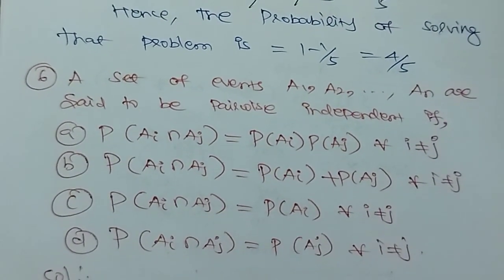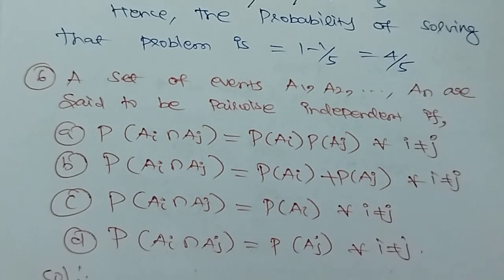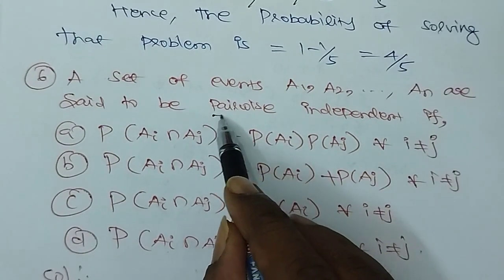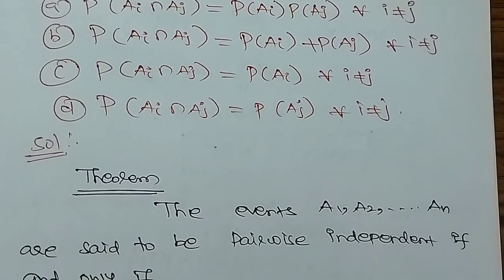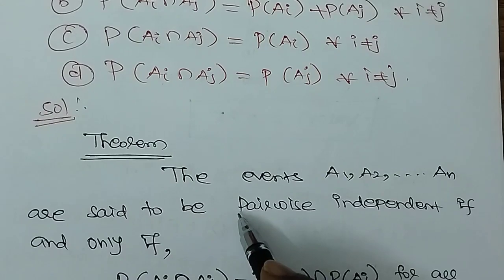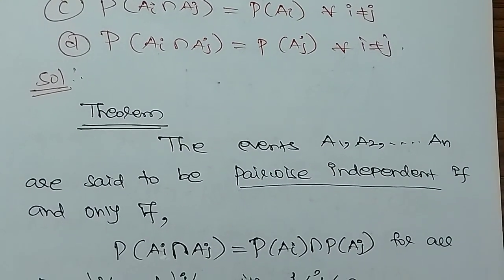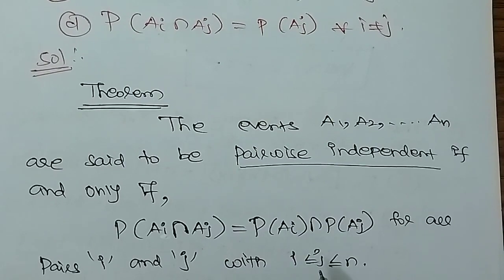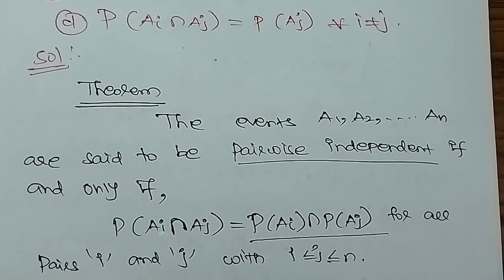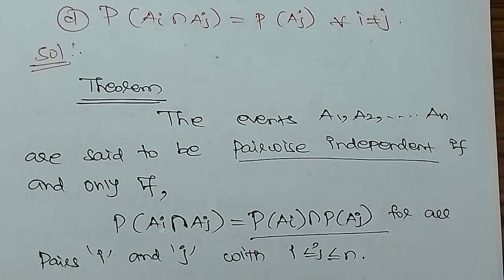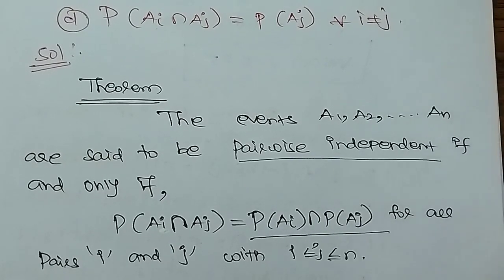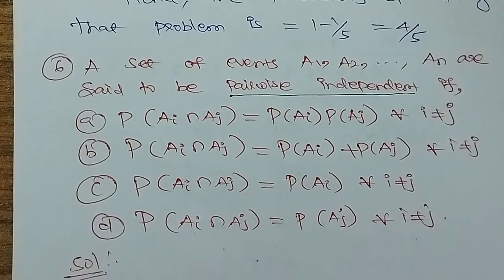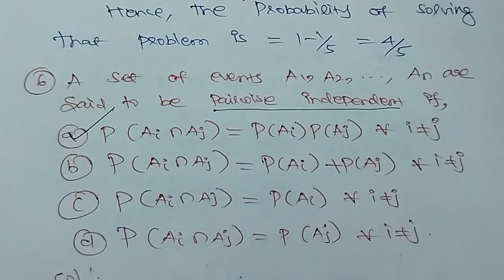Question 6 is a basic property of independence. Events A1, A2, ..., An are said to be pairwise independent if and only if the probability of A_i intersection A_j equals P(A_i) times P(A_j) for all i less than j less than n. This is a standard result in the theory of independent events. Option C is the correct answer based on this property.